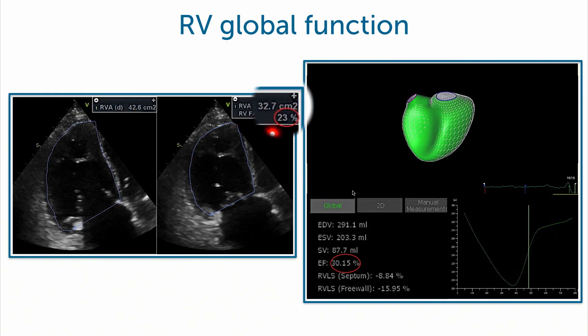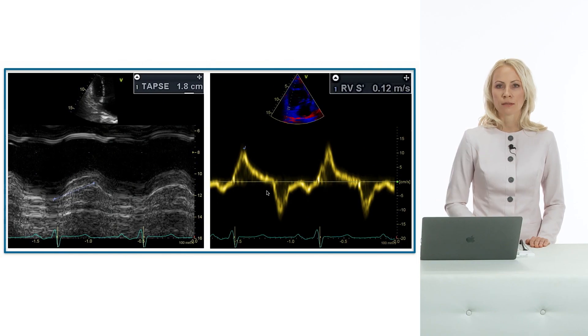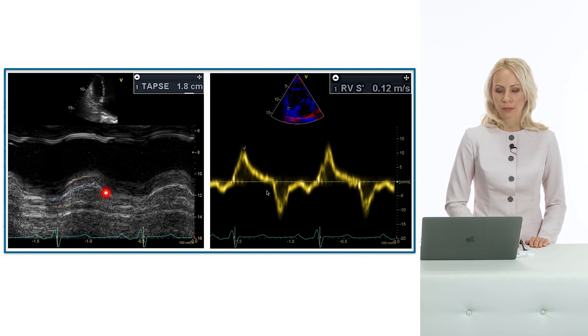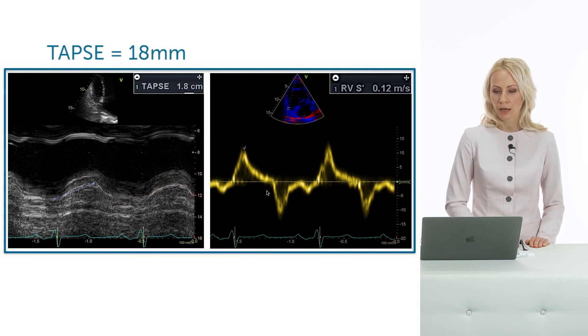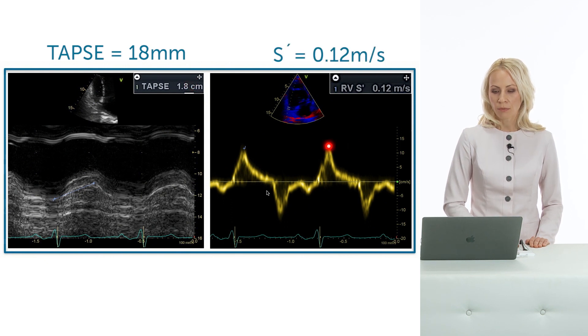RV systolic function is an important prognostic marker in pulmonary hypertension, so we analyzed fractional area change, which is reduced at 23%. On 3D echocardiography, the right ventricle is severely dilated and dysfunctioned with an ejection fraction of only 30%. Looking at longitudinal function parameters, surprisingly, tricuspid annular plane systolic excursion (TAPSE) is normal at 18 mm, and the S' (S prime) wave is also normal.